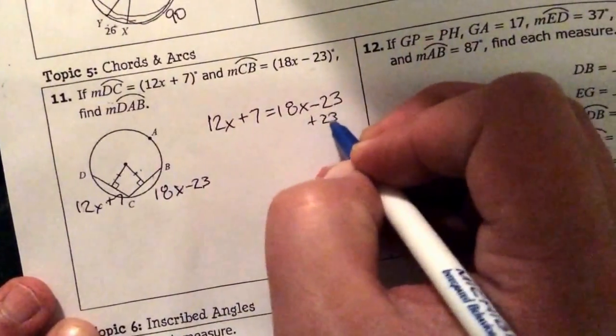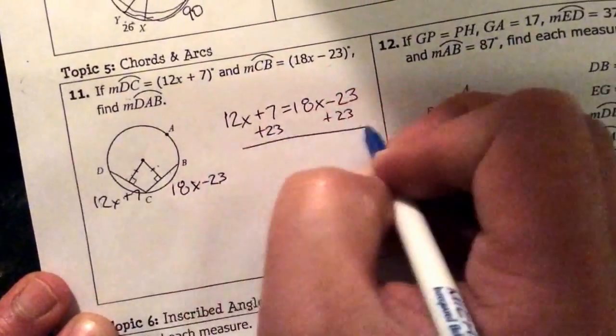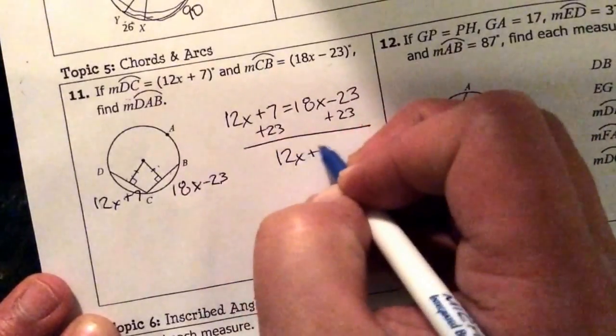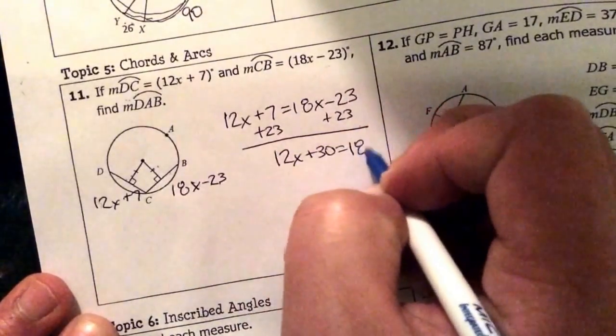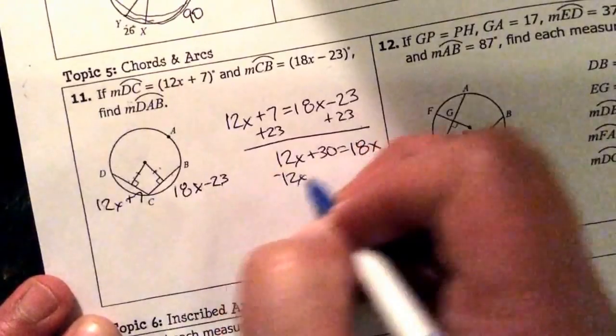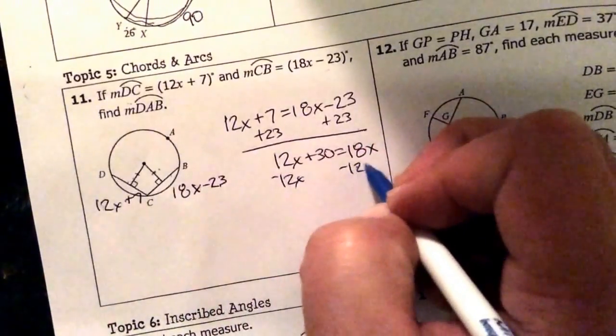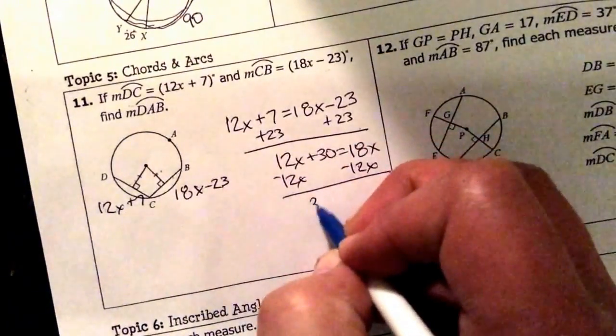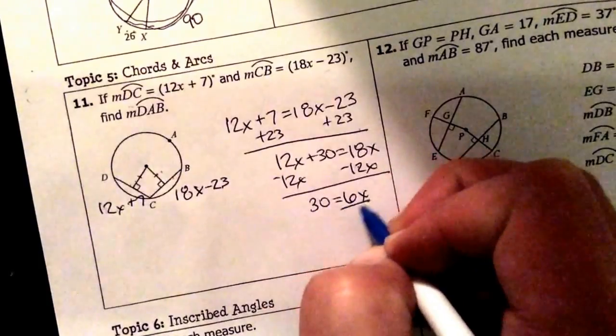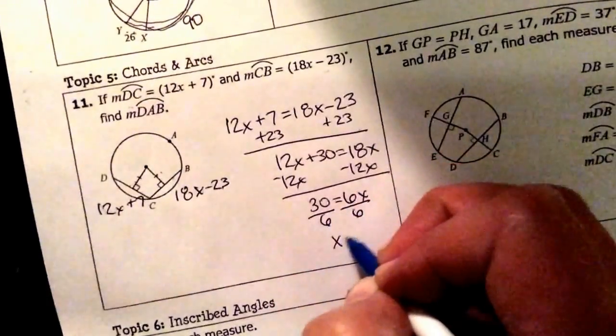I'm going to add 23 to both sides. 12x plus 30 equals 18x. If I take away 12x from both sides, I have 30 equals 6x divided by 6. I get x equals 5.